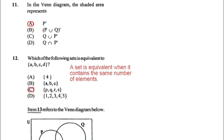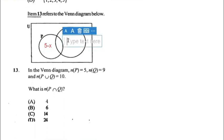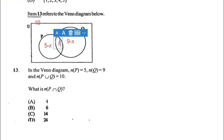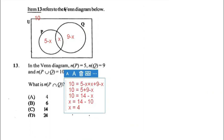Number thirteen: in the Venn diagram the number of elements in P is 5 and in Q is 9, with a union of 10. We label P only as 5 minus x, Q only as 9 minus x, and the intersection as x. So: 10 equals (5 minus x) plus x plus (9 minus x). Simplifying: 10 equals 14 minus x, so x equals 4. The answer for thirteen is A.